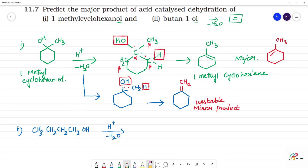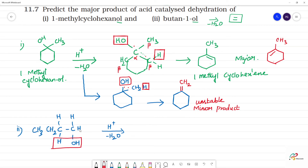In acid-catalyzed dehydration of butan-1-ol, H⁺ removes H2O. The OH is on carbon one — the alpha carbon — and the adjacent CH2 is the beta carbon. Removing OH from alpha and H from beta, electrons form a double bond: CH3–CH2–CH=CH2.